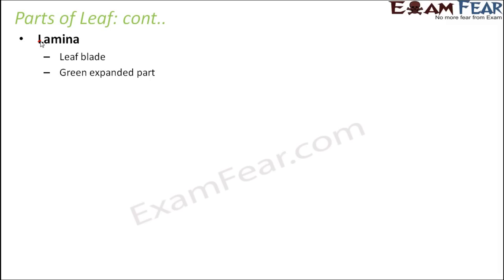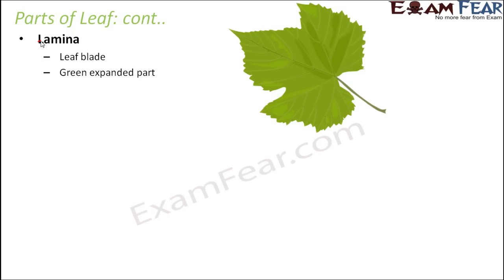We will start our discussion with lamina. What is lamina? It is the green expanded part of the leaf which we can see, often also known as leaf blade. This entire green part of the leaf is lamina. On this lamina you can see extremely minute pores known as stomata, which help in exchange of gases. The cells of the lamina also contain chloroplast, and chloroplast contains chlorophyll which helps in the process of photosynthesis. So lamina is the most important part of the leaf because it contains chlorophyll and stomata.